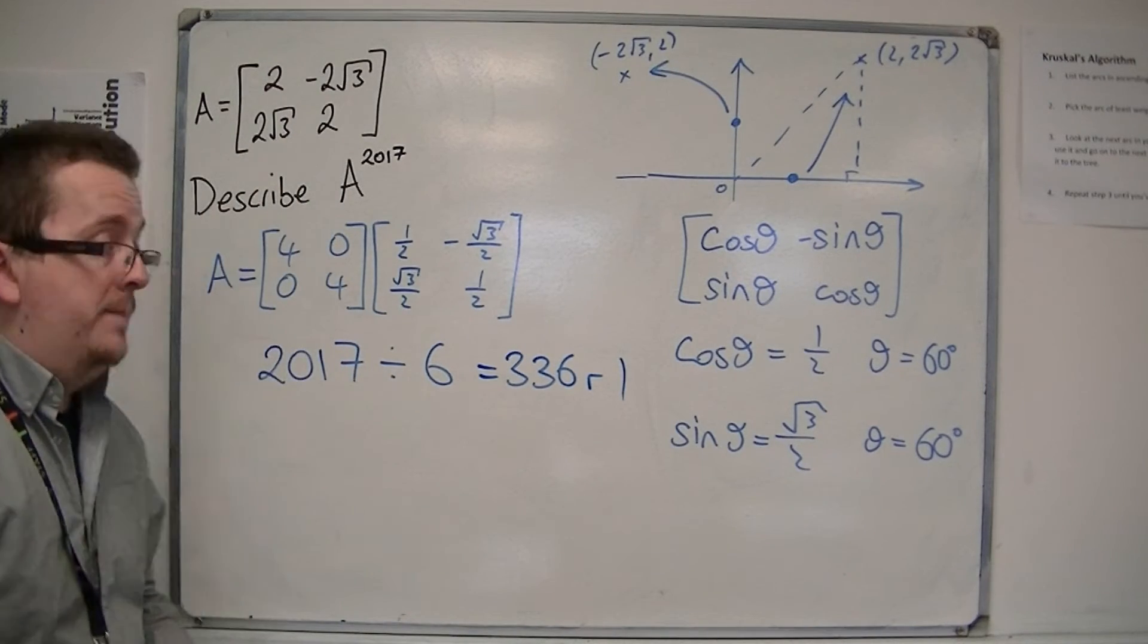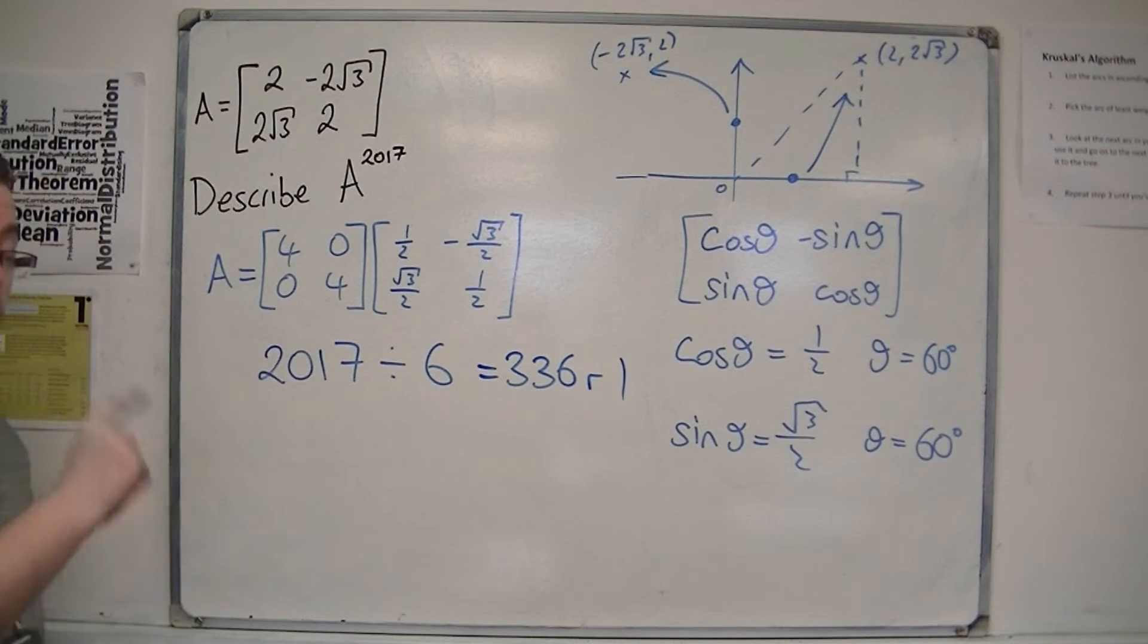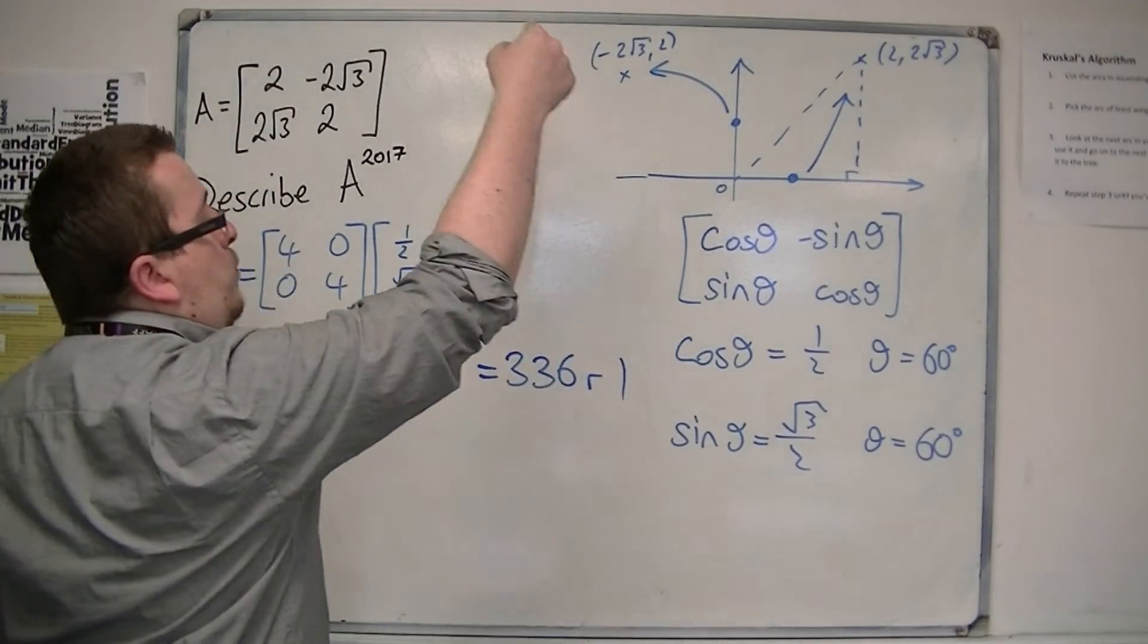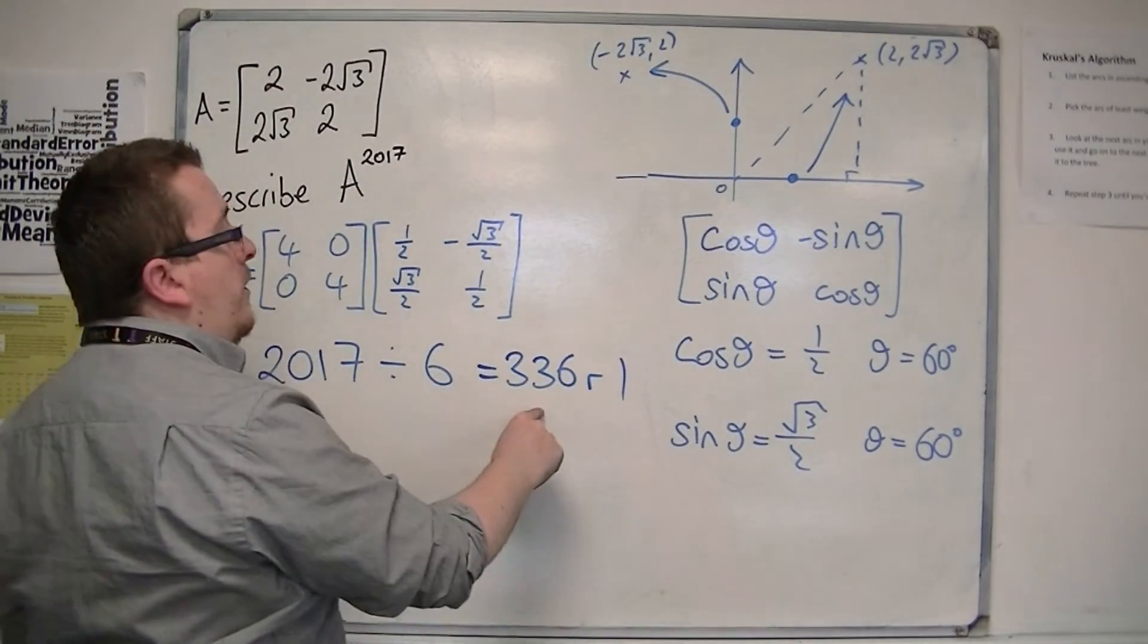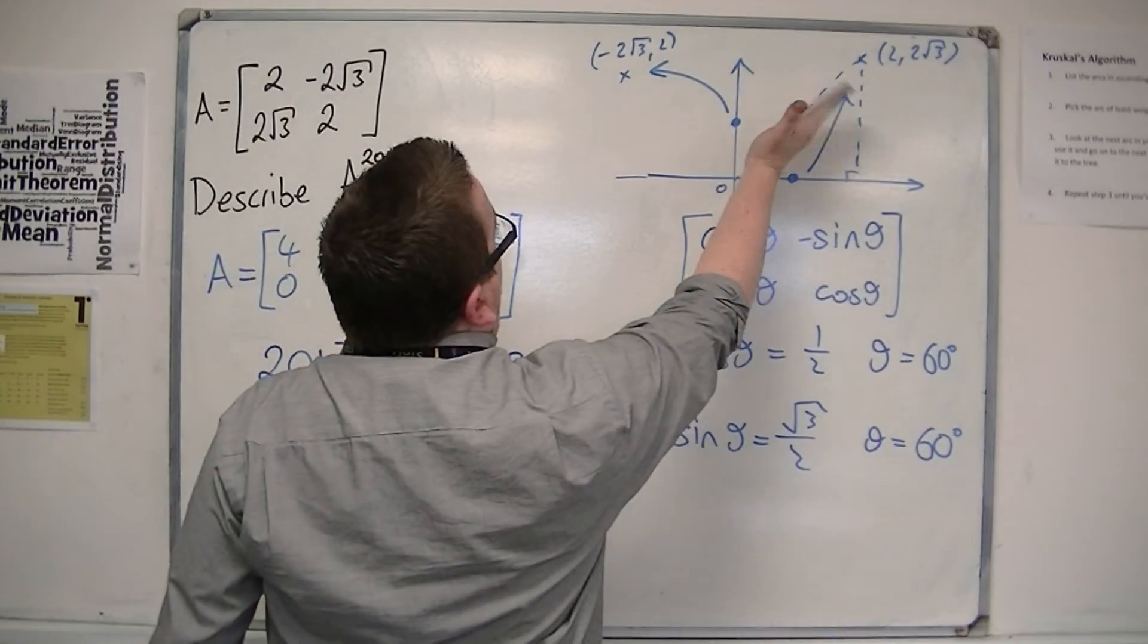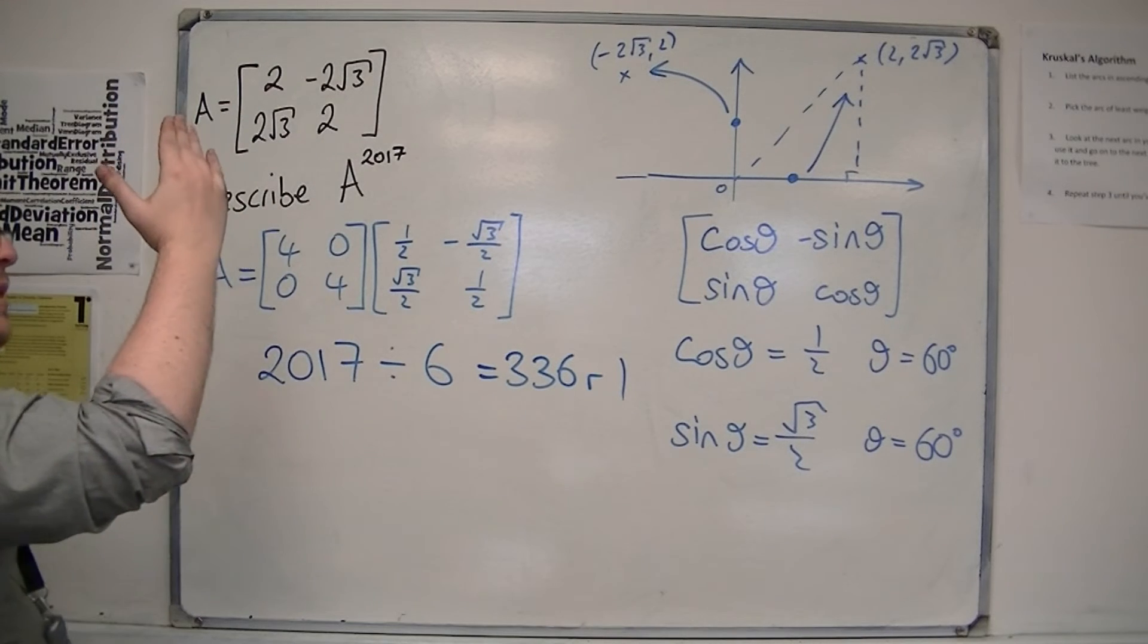So, what's happening is that if I do this transformation 2017 times, I will go round in a circle 336 times and do one click round by 60 degrees extra.